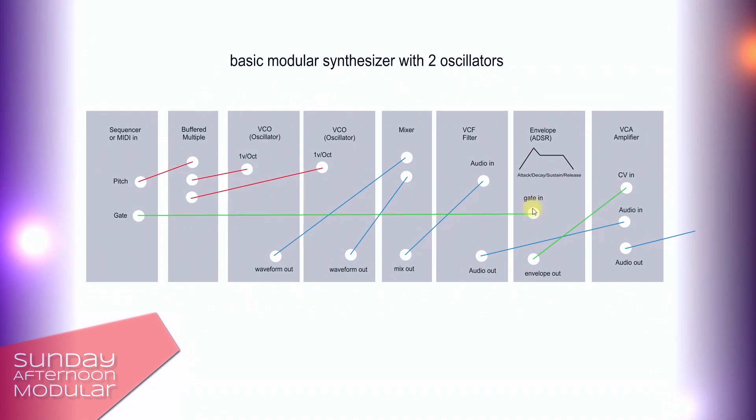Also often called ADSR because you can control the attack, decay, sustain and release of the signal. The envelope module then gets patched into the CV input of the VCA so our VCA can receive the envelope signal.